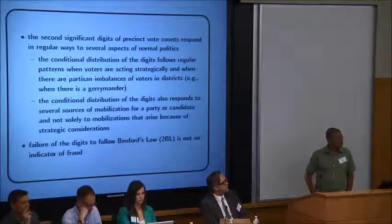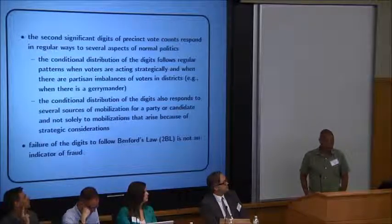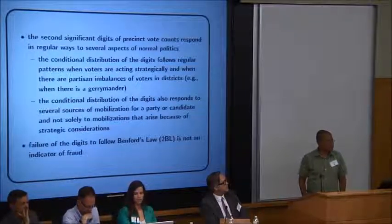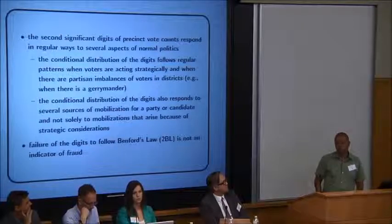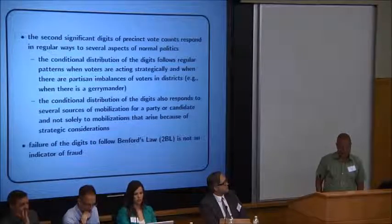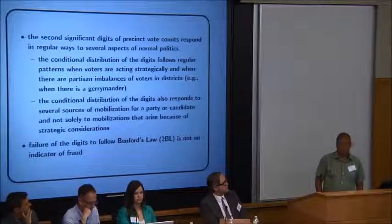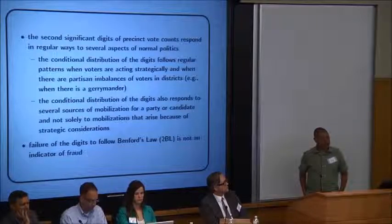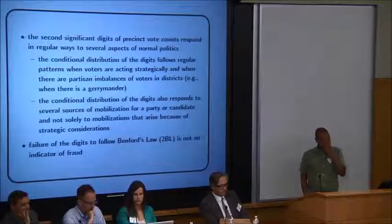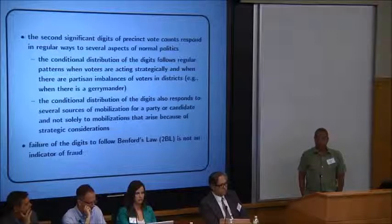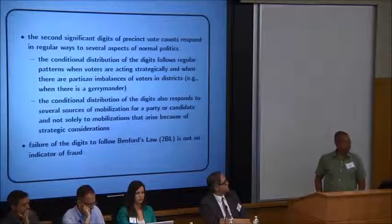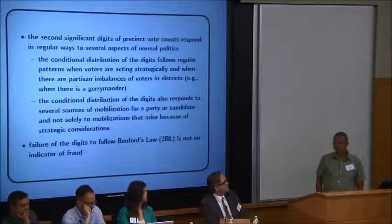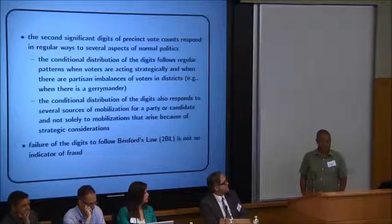I'm looking at the second digit. Without getting into all the background, there's something called Benford's Law that describes a particular pattern in which the digits in a number ought to occur. For example, Benford's Law says that a zero should occur as a second digit about 12.5% of the time. Two statisticians, Parici and Torres, have claimed in a paper published a couple of years ago that this law applied to vote statistics is a sufficient measure for detecting election fraud.